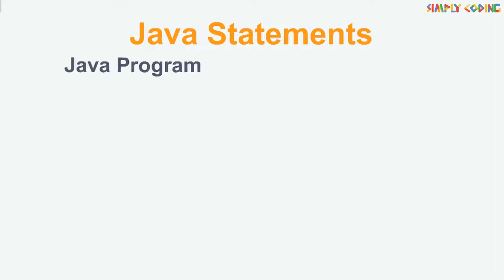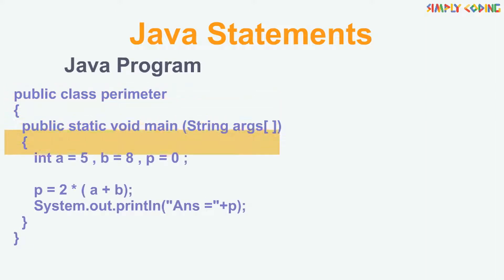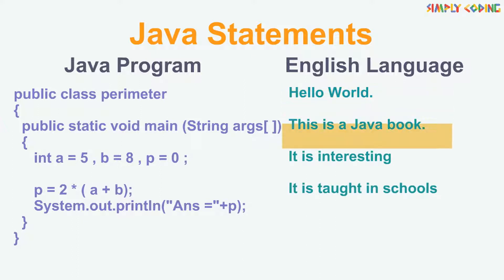When we write a Java program, it consists of multiple statements. Like in English language, we have multiple sentences. A statement forms a complete unit of execution.